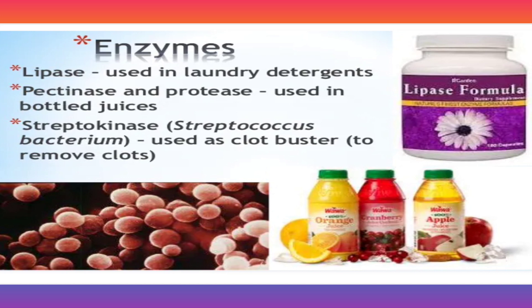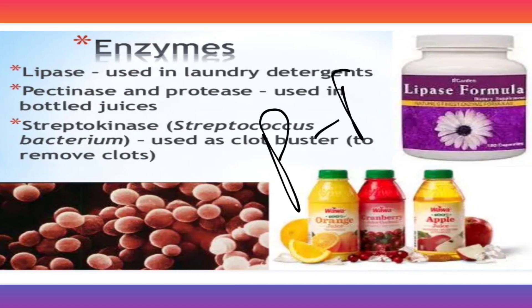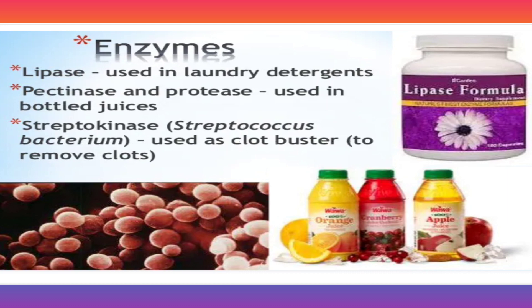Now, enzymes — lipase is used as a laundry detergent. Remember: L from lipase and laundry. Pectinase and protease are used in bottled juices — remember P and B. Streptokinase is used as a clot buster to remove blood clots.